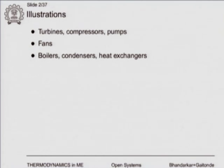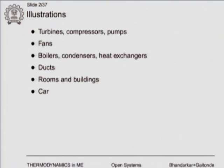A power plant is a typical example which will have nearly all of these: boilers, condensers, heat exchangers, ducts, rooms and buildings, and other systems like a car and a human being can also be considered open systems. But we will be primarily looking at the first few because these are more typical engineering applications.